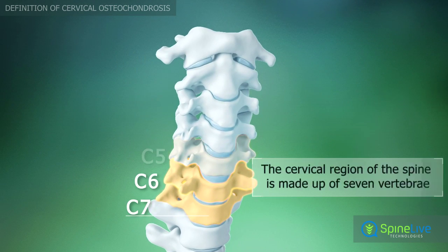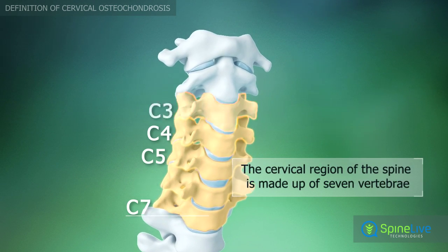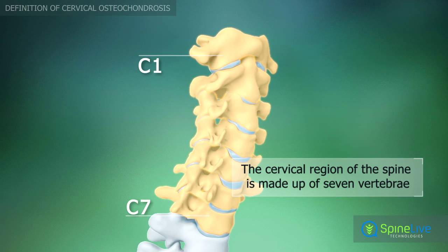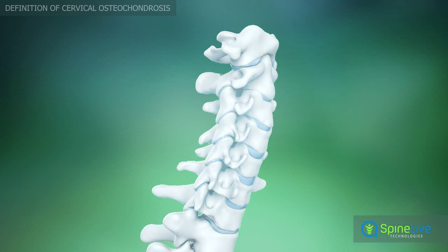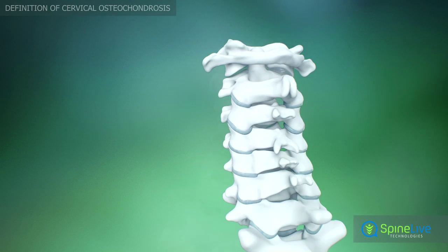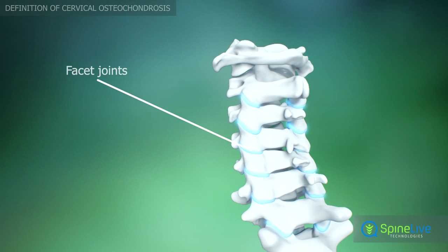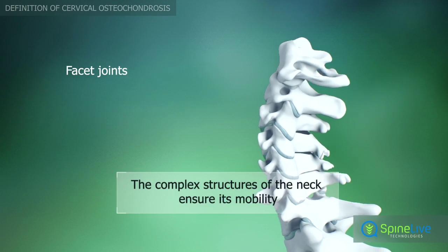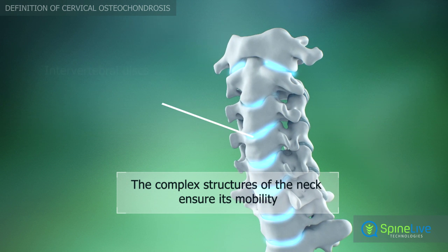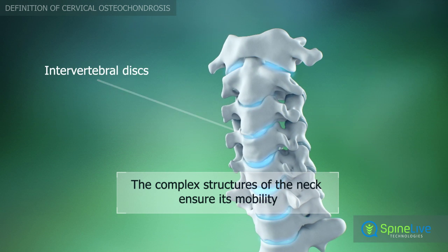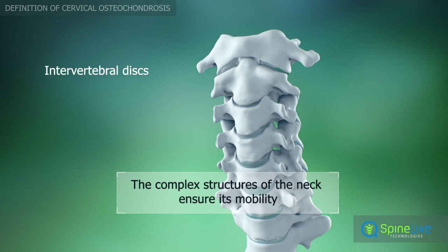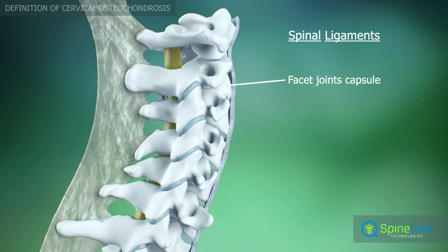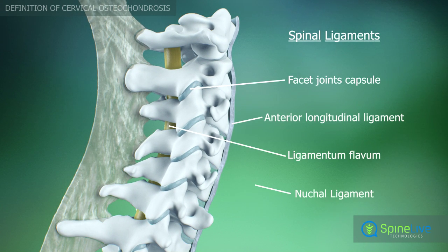The cervical region of the spine is made up of 7 vertebrae, which are designated as C1 through C7. The cervical region of the spine is very mobile. Its mobility is ensured by the facet joints, the intervertebral discs, and the spinal ligaments.